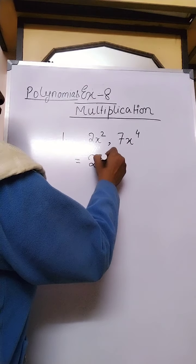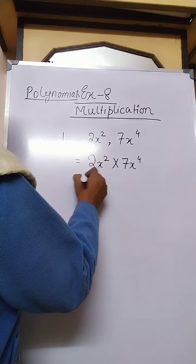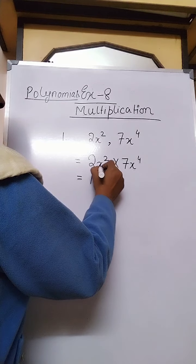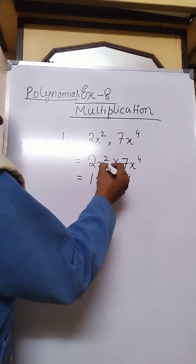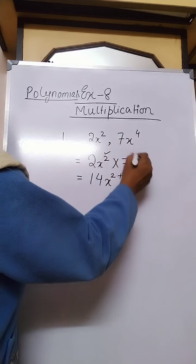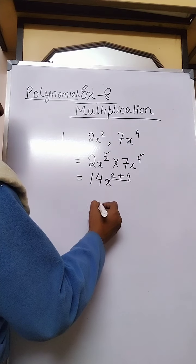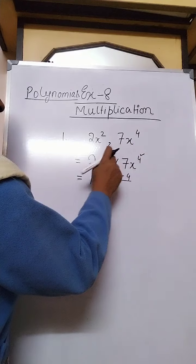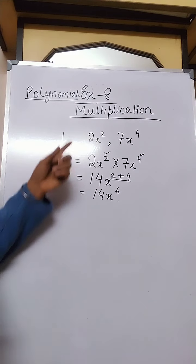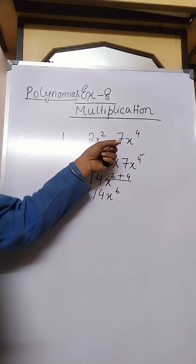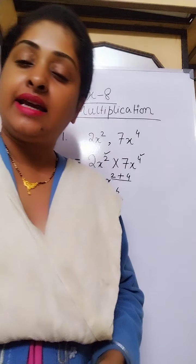So 2x squared into 7x to the power 4: the coefficients give 2 times 7 equals 14, and for x, you write x to the power 2 plus 4. That means the power of x in the first expression is 2 and in the second expression is 4, so 2 plus 4 gives 6. The answer is 14x to the power 6. Since both numbers are positive, the product is also positive.